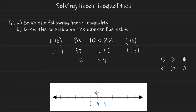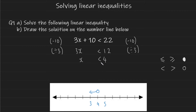Next, draw an arrow coming out of the circle. In this case the arrow goes to the left, because of the less-than inequality symbol. If your variable is on the left, the value is on the right, and the variable is isolated, you can use the inequality symbol as a direct indication of which way the arrow goes. And that's how you solve a linear inequality and draw the solution on a number line.